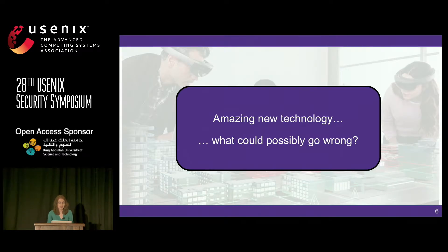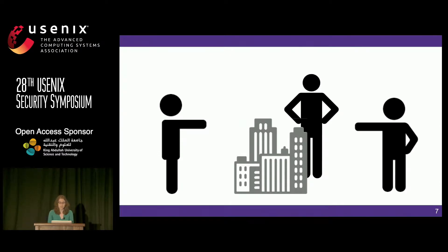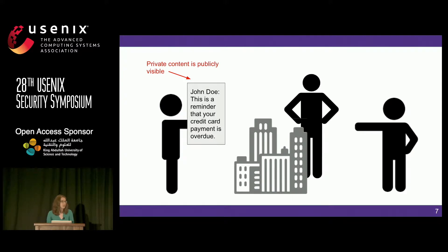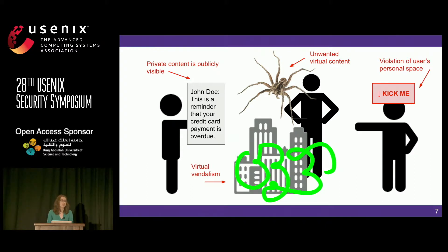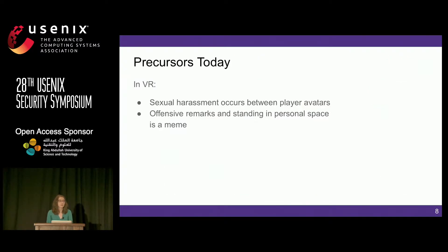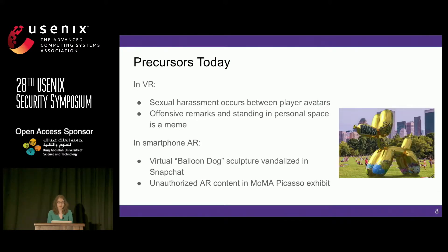We have to look at these interactions and ask ourselves: what could possibly go wrong? Suppose a message pops up for one user that's publicly visible but really should not have been. Or another user draws virtual graffiti on the model everyone is working on, or attaches a sign to someone without their consent, or creates a giant arachnid that everyone can see and nobody can get rid of. We're already seeing precursors of these issues: virtual reality has been grappling with harassment between players for years, and in smartphone AR we're starting to see vandalism and other misdemeanors.